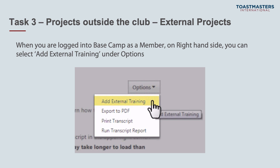Task three — projects outside the club. With Pathways, you can actually do projects outside your club. When logging into Basecamp as a member, under the options box you can see add external training. If there's a project in your path that is pertinent to something you're doing at work or in another capacity, you have the option to request that it fits the goals of that project and have it count as credit towards your Pathways learning experience. The member requests this, and as Basecamp Manager, you then validate that they completed that project.